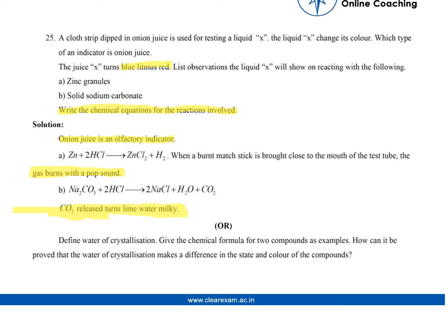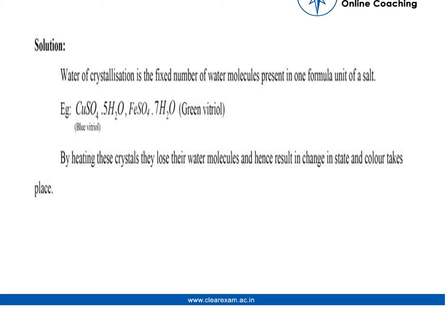Define water of crystallization. Give the chemical formula for two compounds as examples. How can it be proved that water of crystallization makes a difference in the state and color of the compounds? So water of crystallization is the fixed number of water molecules present in one formula unit of a salt. Remember to mention this part.